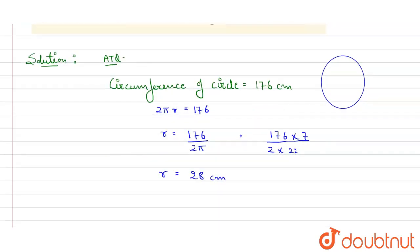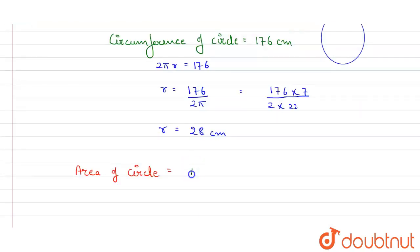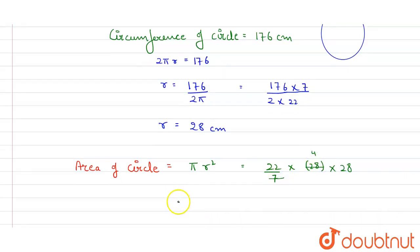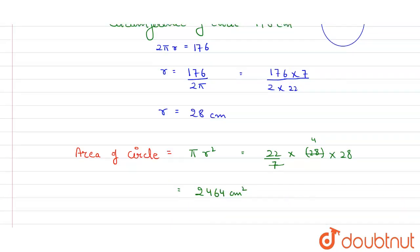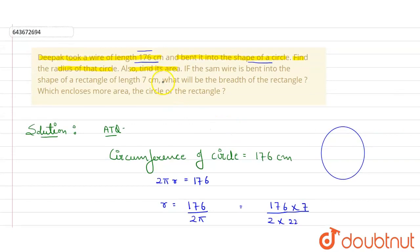Now I have to find the area of the circle. Area of the circle, we know the formula, it is πr². Value of π is 22 by 7 and r² means radius we have got the value 28 into 28. So 7 into 28 is 22 multiply 4 multiply 28, so area will be equals to 2464 centimeter square.